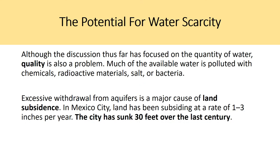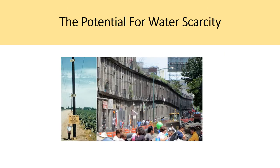Although the discussion thus far has focused on the quantity of water, quality is another problem. Much of the available water is polluted with chemicals, radioactive materials, salt, or bacteria. Excessive withdrawal from aquifers is also a major cause of land subsidence. In Mexico City, land has been subsiding at a rate of one to three inches per year, and the city has sunk 30 feet over the last decade. As the water is withdrawn from the water table, the soil continues to sink because there's empty space underground — and this land subsidence can seriously impact the architectural structure of buildings.